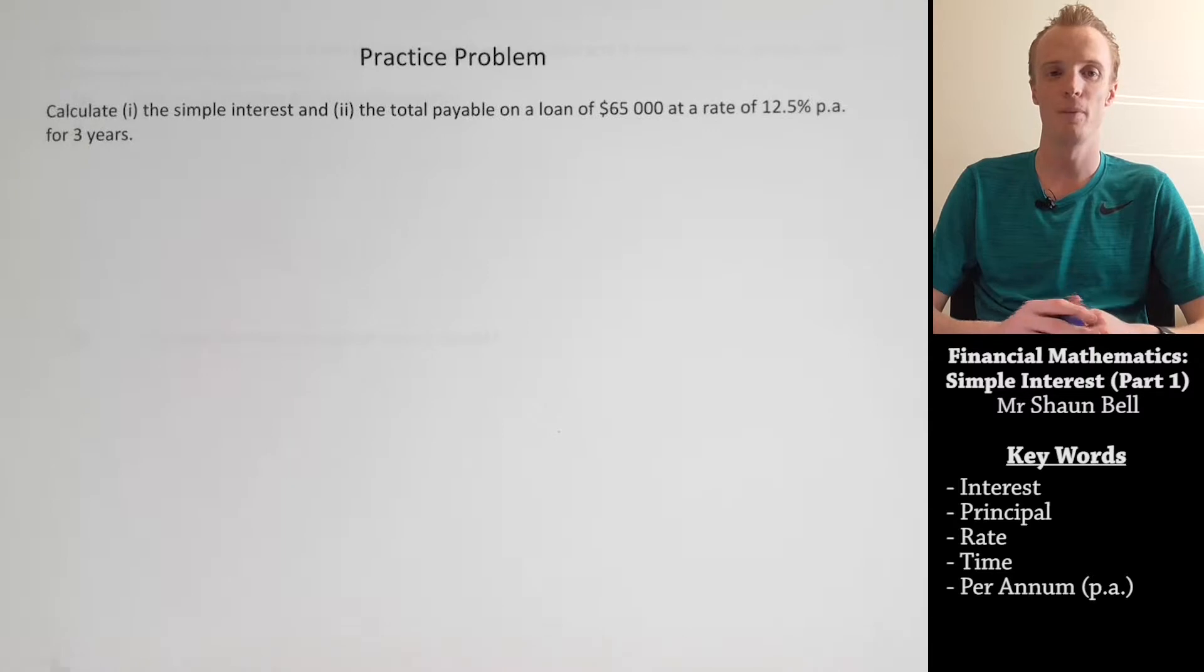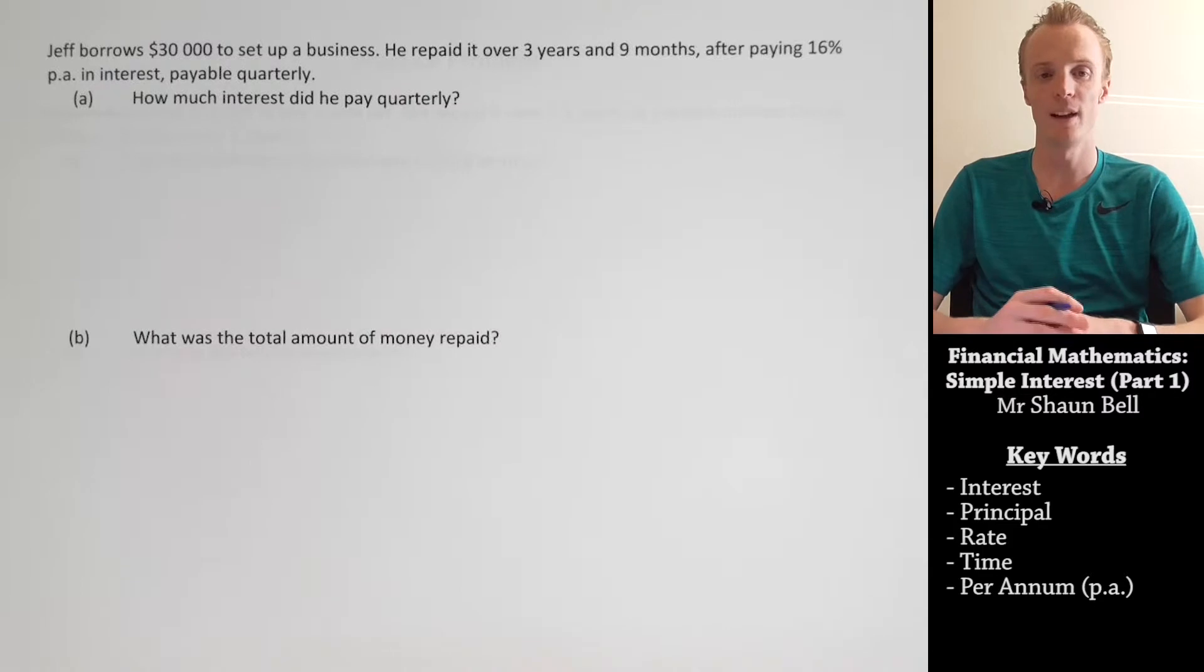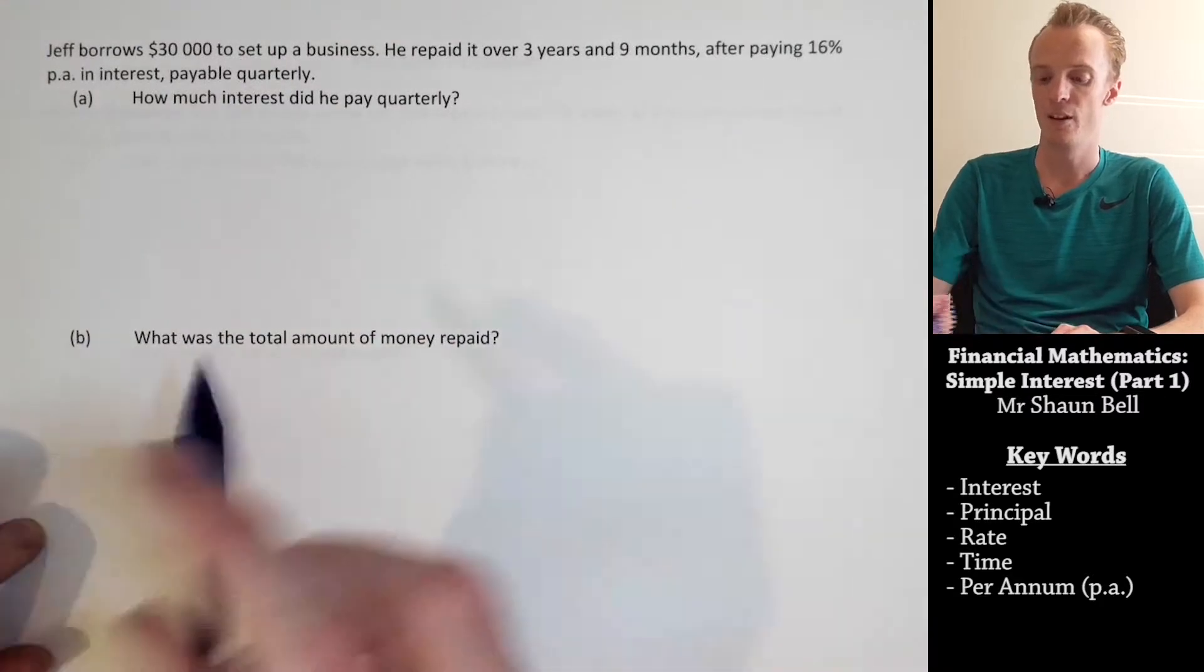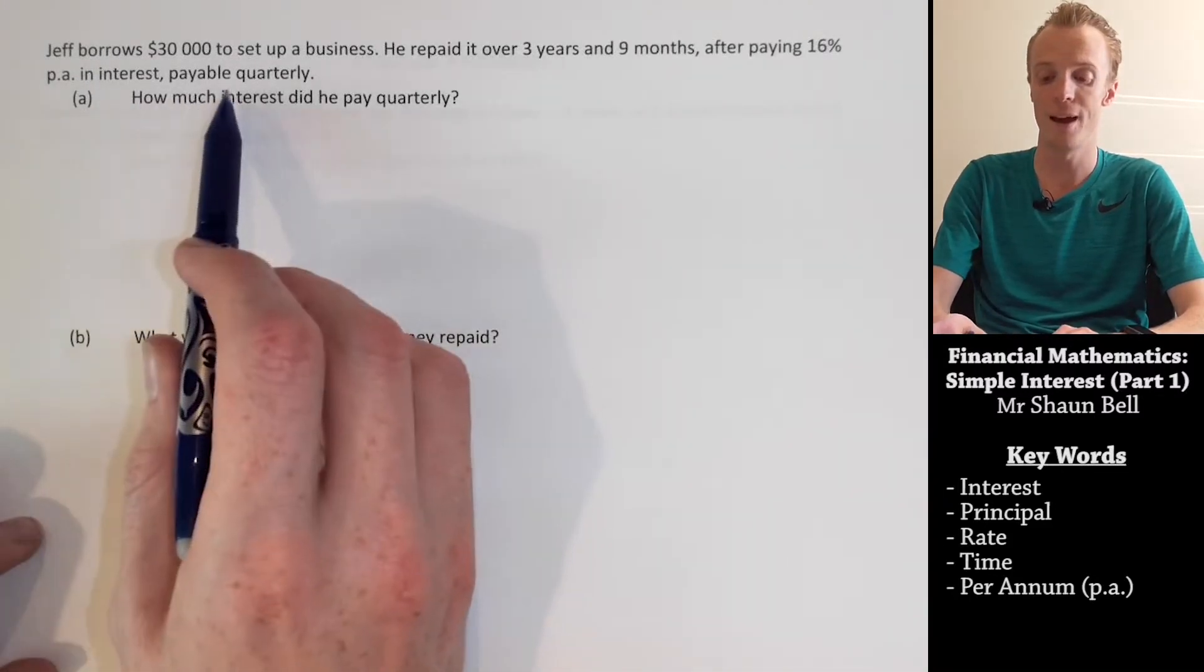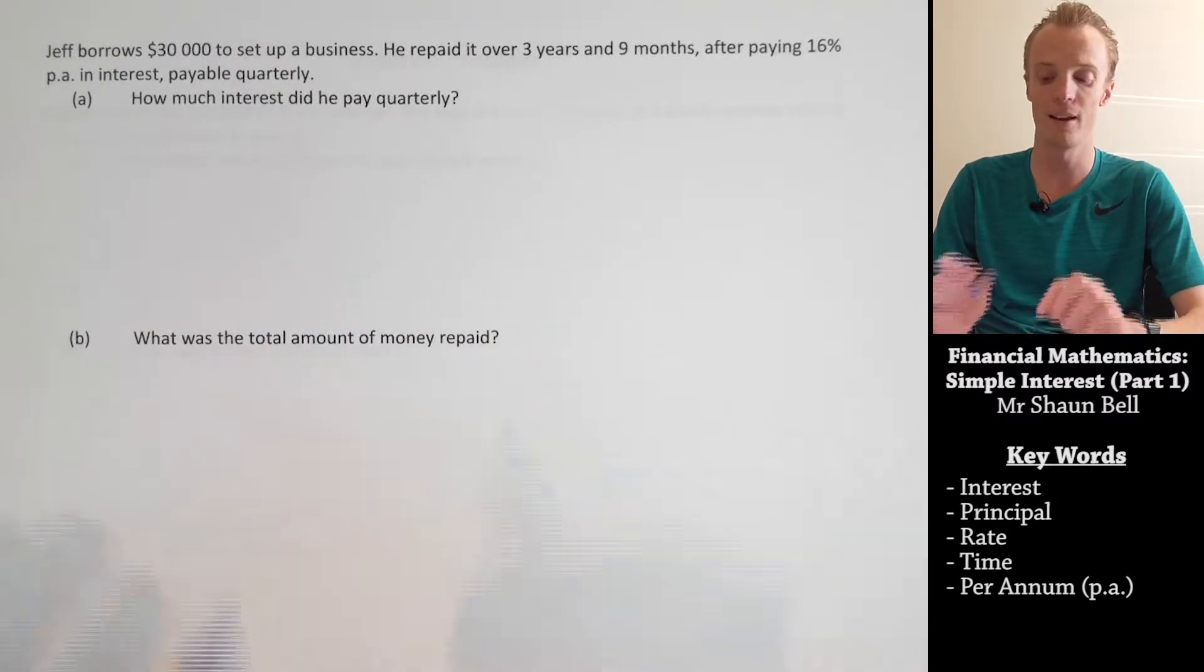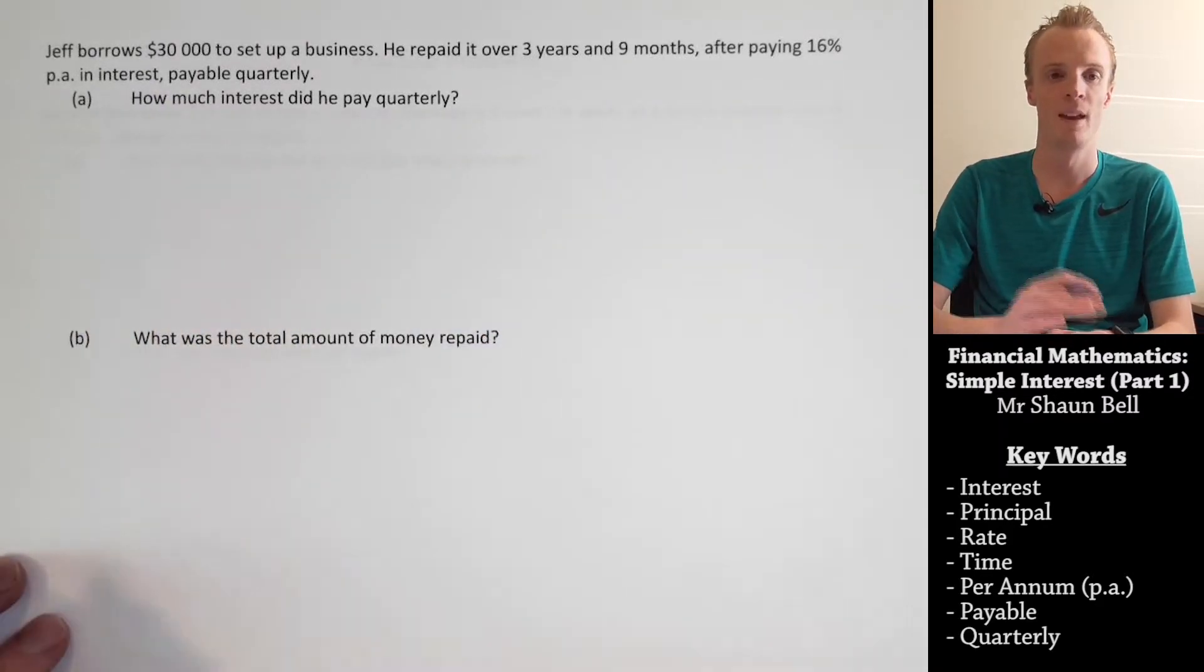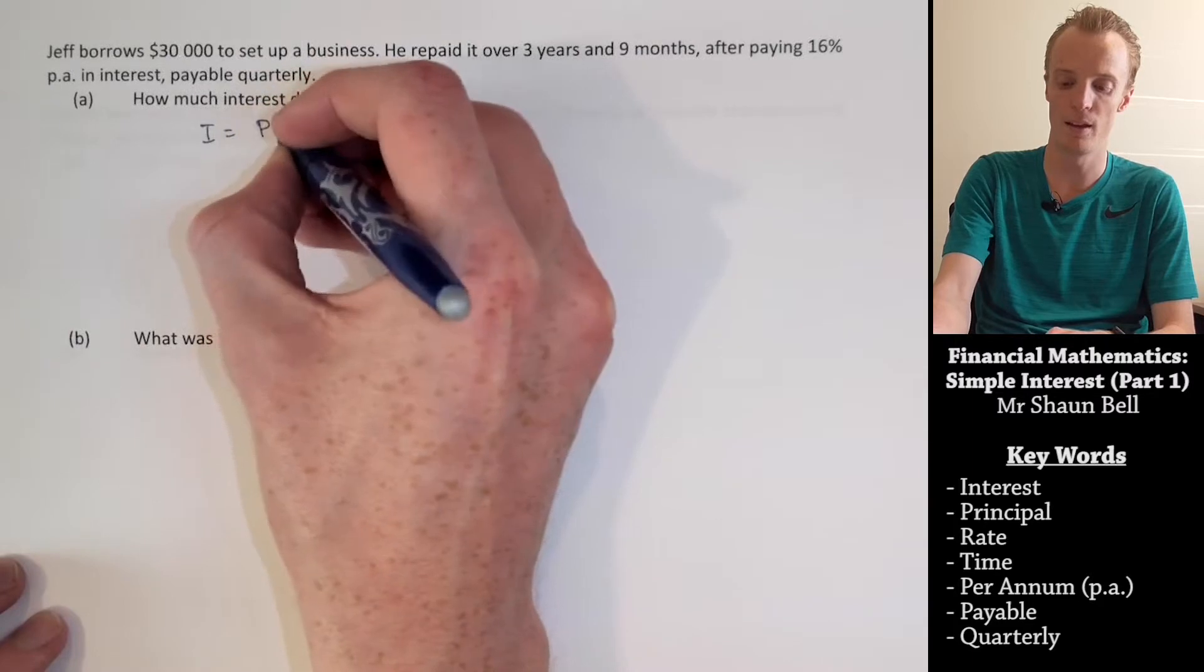Now, I've created a problem here for you to pause and practice where the interest is payable yearly. However, the interest is not always payable yearly. So, if we look at our next problem, we find that Jeff borrows $30,000 to set up a business. He repaid it over three years and nine months after paying 16% per annum in interest that's payable quarterly. We want to know how much does Jeff pay in interest each quarter, but also what is the total amount of money that he repaid? Now, let's focus on this first part where we're looking at how much interest did he pay quarterly. Let's start by writing our formula down where I is equal to PRT.